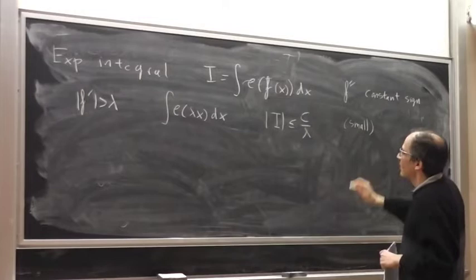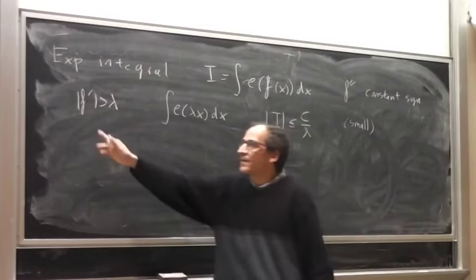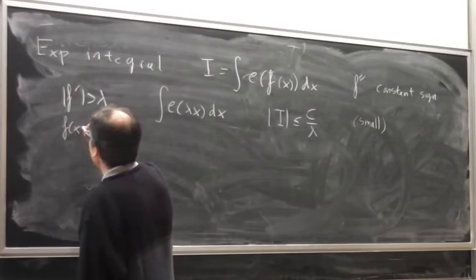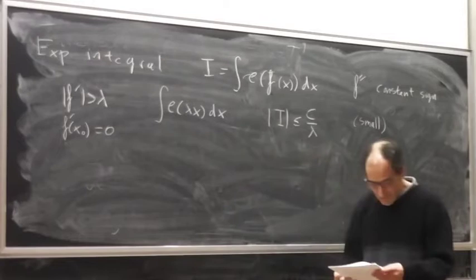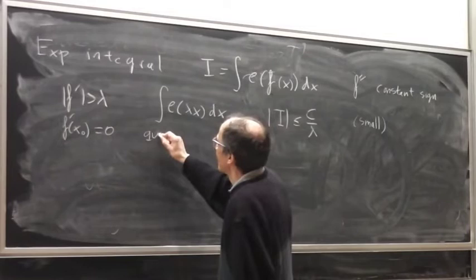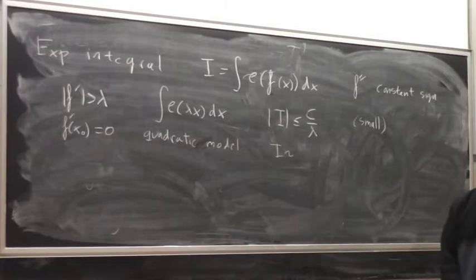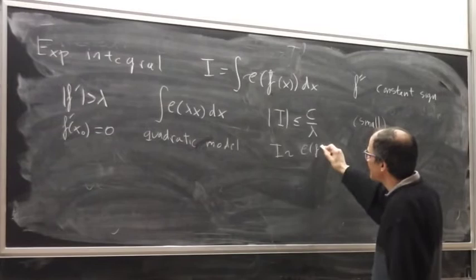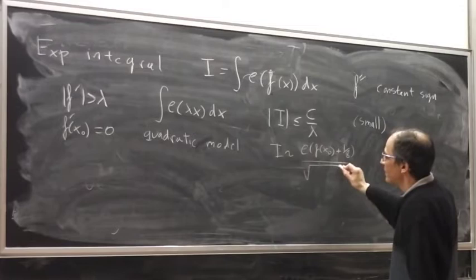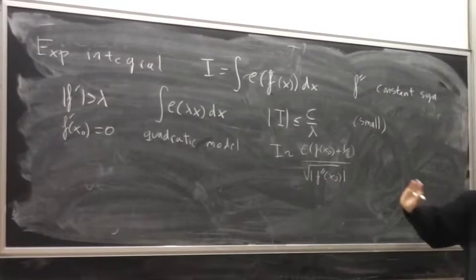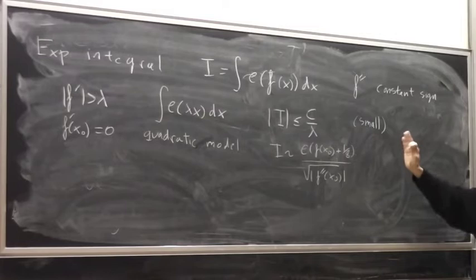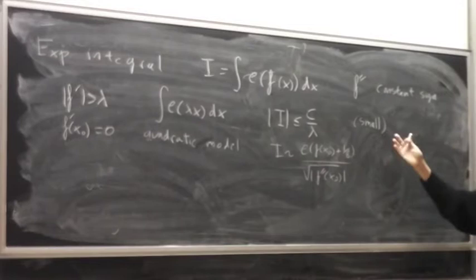On the other hand, if you don't have a bound for the derivative — in the extreme case that you have a zero, a stationary point — then you have a kind of quadratic model. There is an asymptotic formula for the integral, and it gives something like a constant times a certain expression. The point is that this is not small in general. So the moral of the story is: if the derivative is large, you have a good bound; if it is not large, you have a kind of oscillatory term.